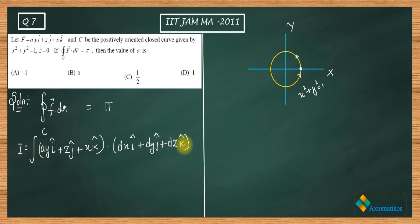So just dot product these two things. Let us say this is I, so I = π. Just dot product these two things - what you will end up with is ay dx + z dy + x dz. And where are you? You are on the circle. Now on the circle you have z always zero.